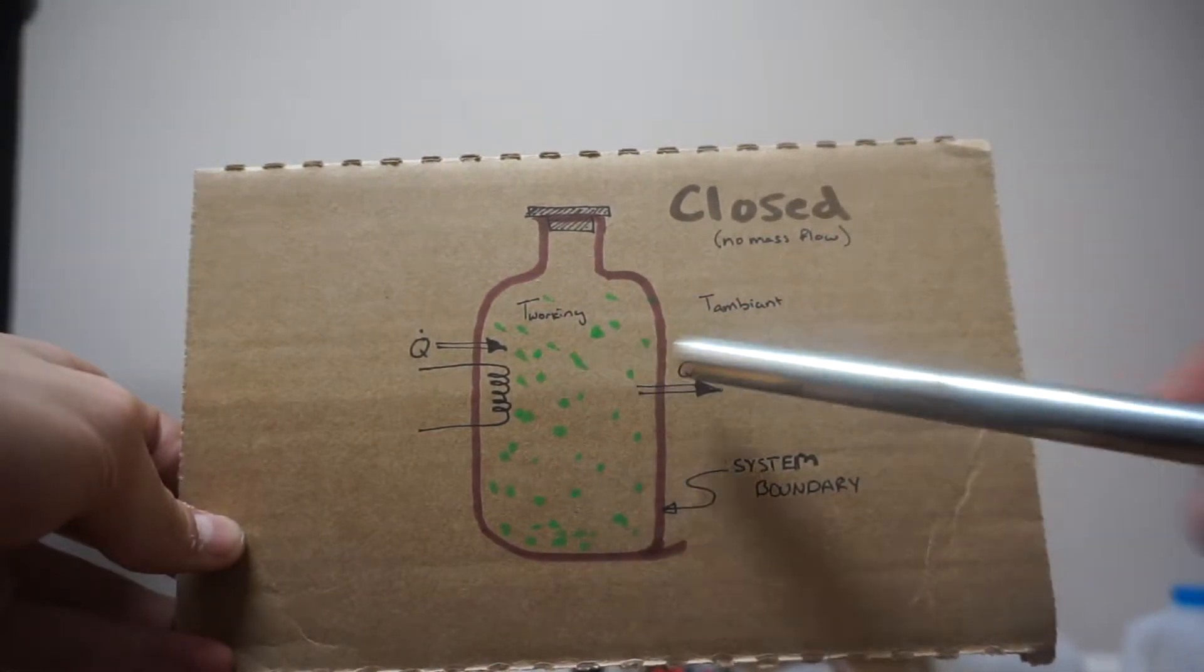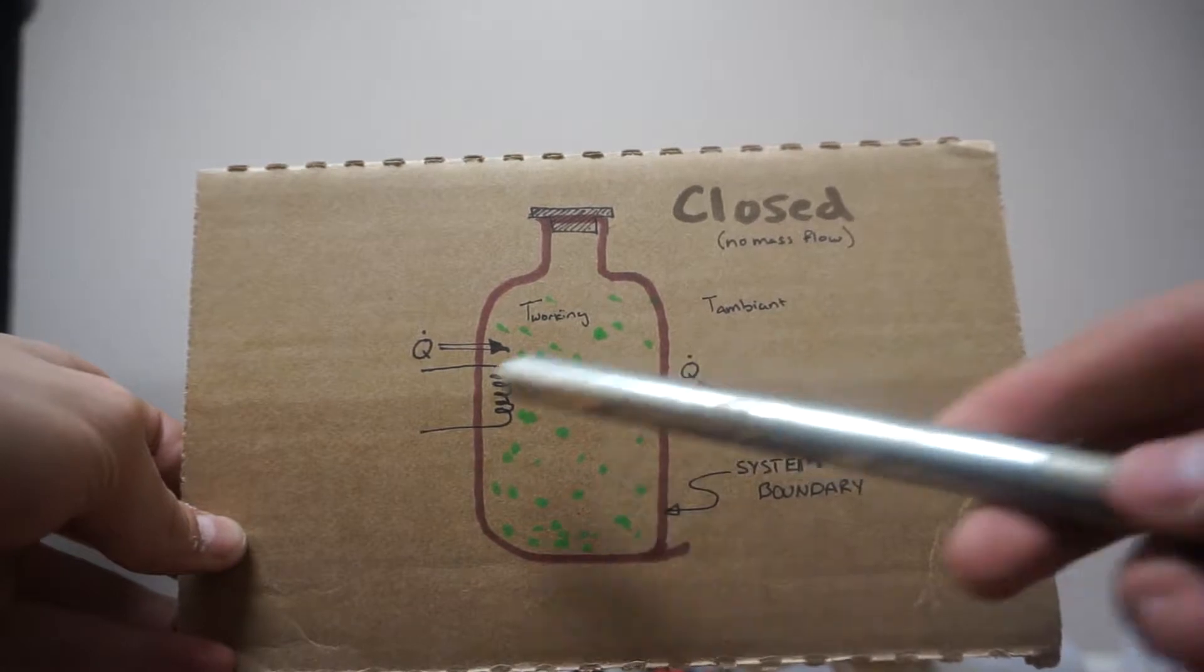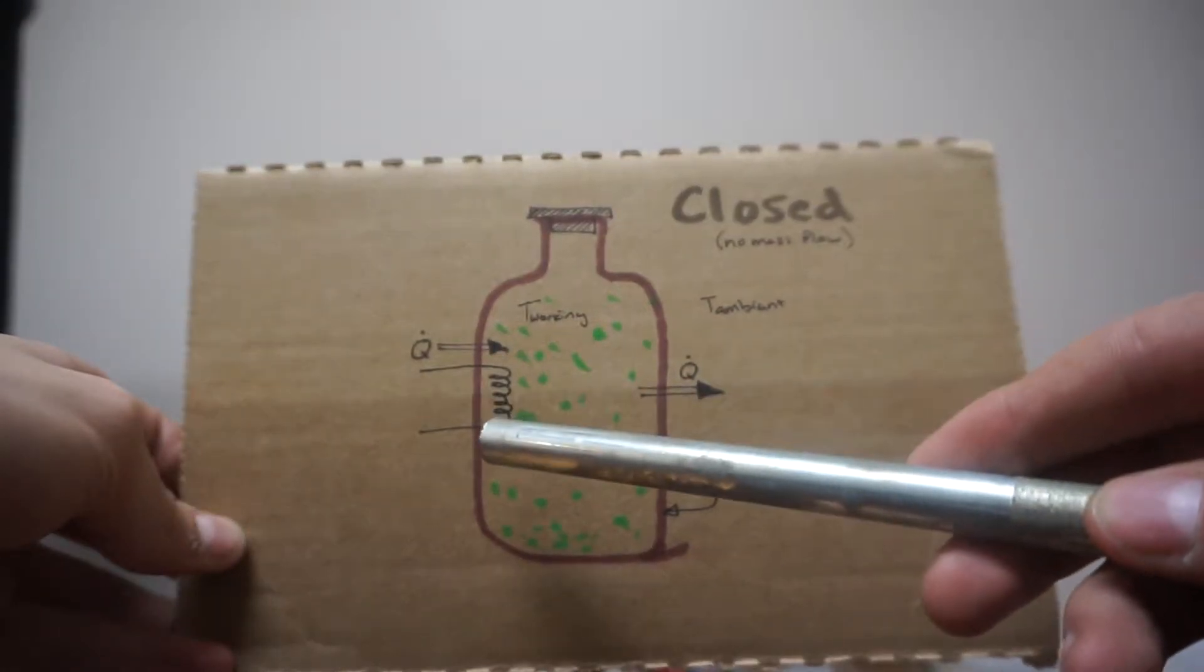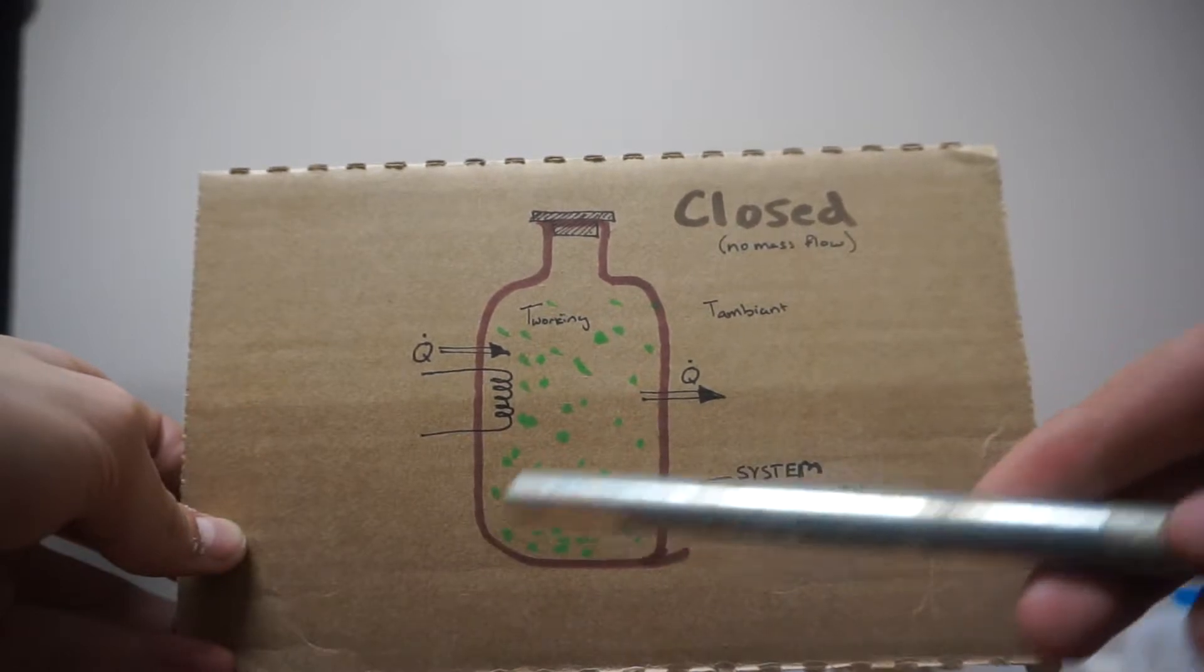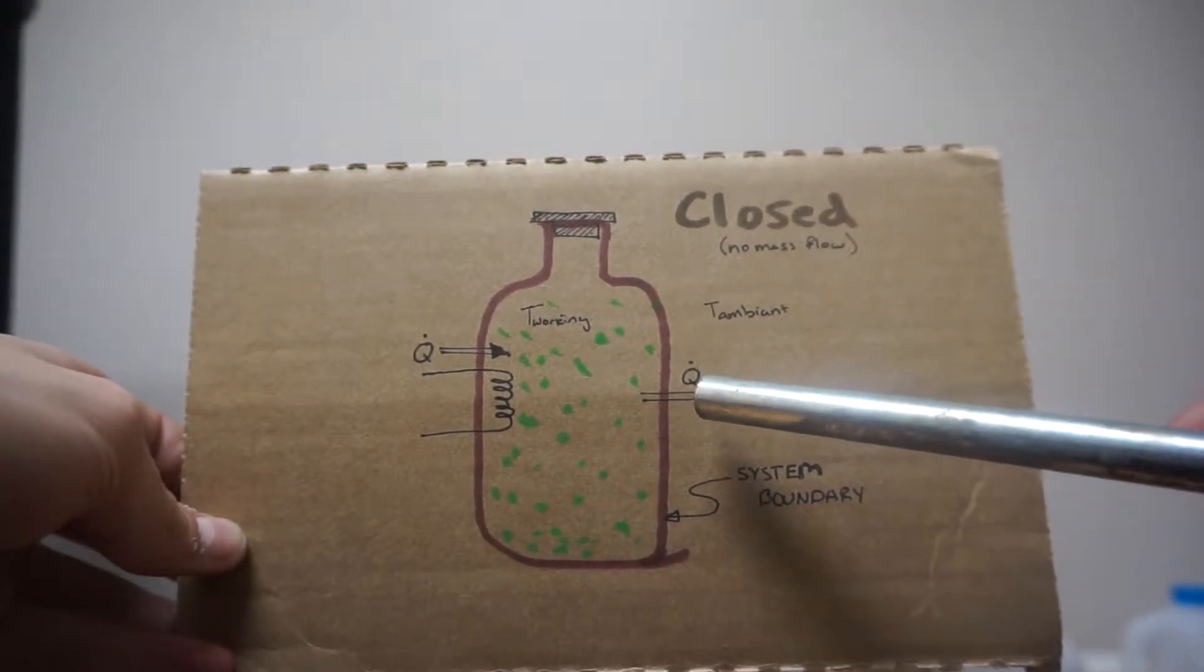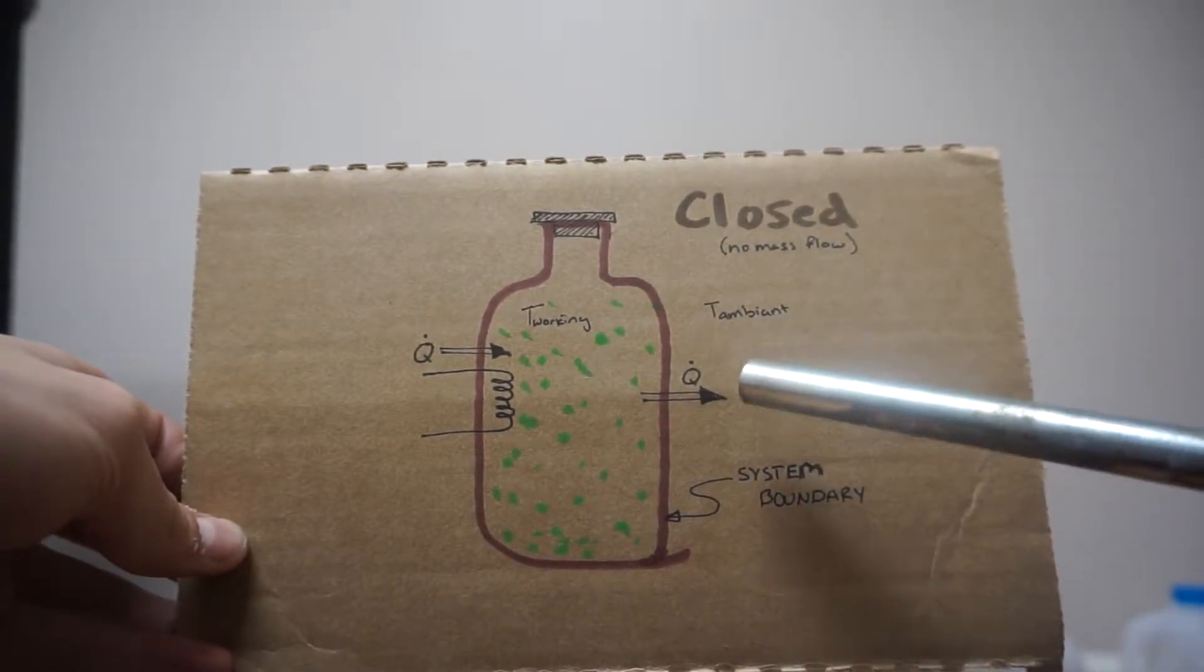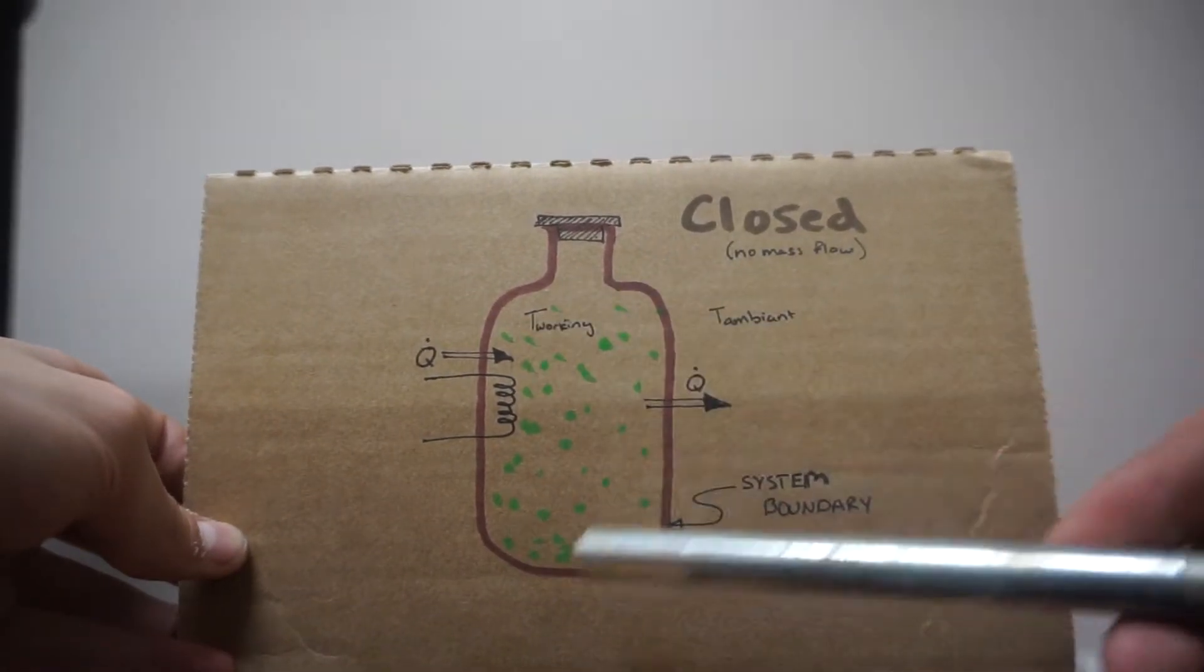Now if you can keep the Q going into this heating coil or heating pad or whatever it's going to be, or maybe it's a water jacket, equal to the heat that's going to be leaving just naturally, then you can have a constant temperature inside your closed system.